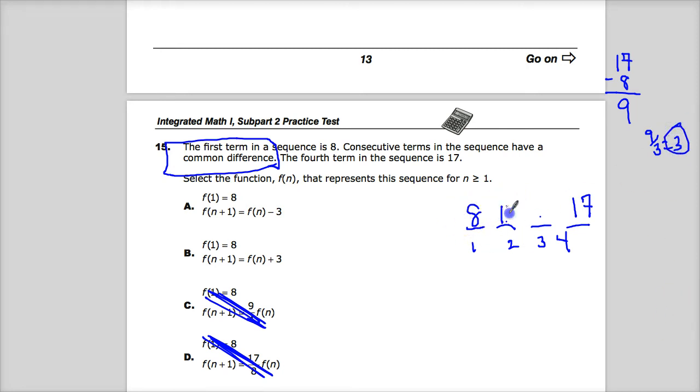8 plus 3 is 11. 11 plus 3 is 14. 14 plus 3 is 17. It's easy to find the common difference if you're given just a little bit of information.